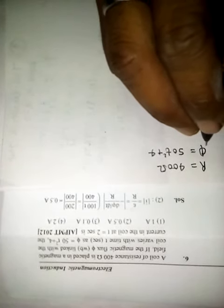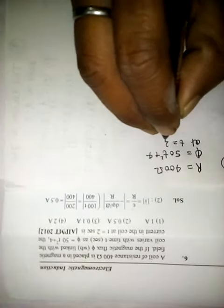Question number six, every question AIPMT 2012. A coil of resistance 400 ohm is placed in a magnetic field. If the magnetic flux linked with the coil varies with respect to time, we need to find the current in the coil at t equals 2 seconds.